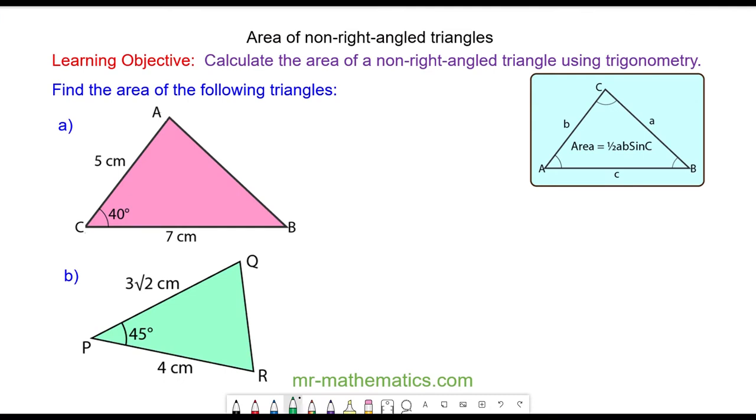Hello and welcome to our lesson on finding the area of a non-right-angled triangle using the formula: the area is equal to one half AB sine C.